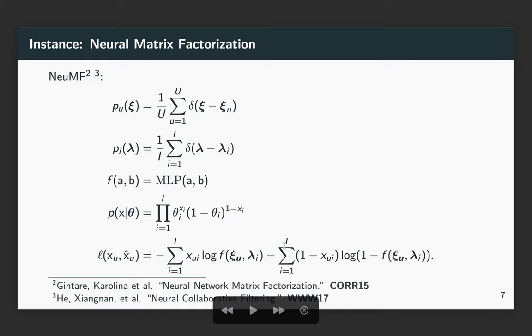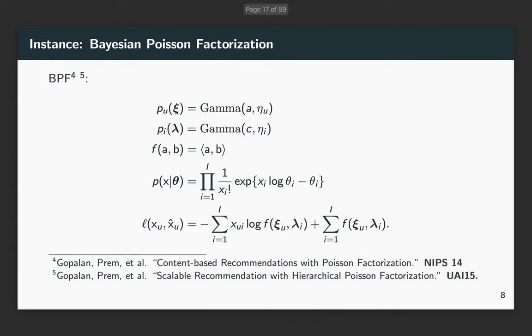Neural MF replaces the inner product with MLP and uses the Bernoulli distribution for the observation sampling distribution. The Poisson factorization model uses the Poisson distribution for the observation sampling distribution.